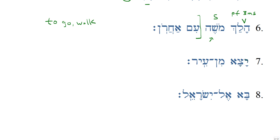Number seven: Yatsa min ir. Here's a case where we do not have an explicit subject. We have the verb Yatsa — again, perfect third masculine singular — meaning 'to go out' or 'to exit.' Without an explicit subject, we need 'he' as the subject of our sentence. Min ir — 'from a city.' Without an explicit subject, we supply the pronoun that goes along with third masculine singular, which is 'he.' He went out from a city.